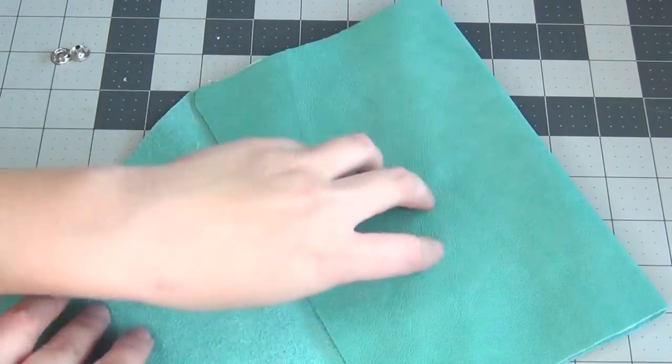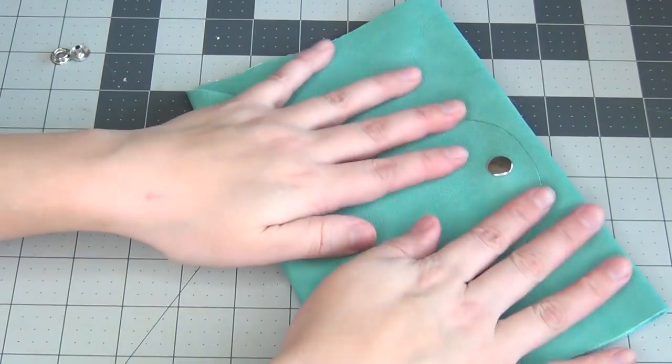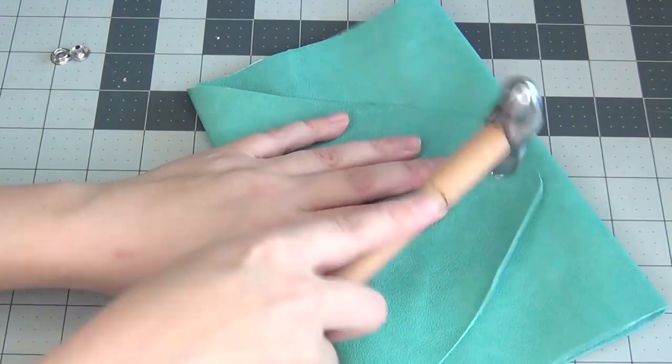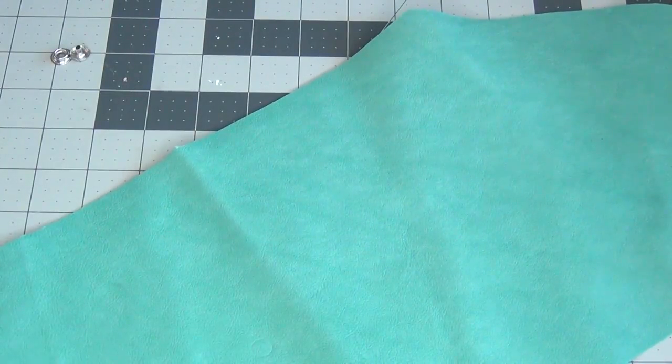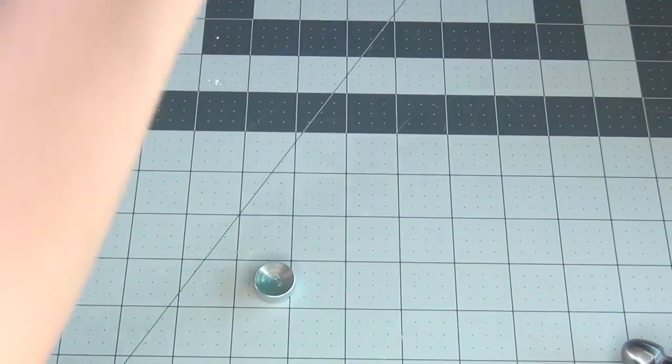Then fold up your bag the way it's going to go and gently tap with your mallet to make a mark where your inside snap is going to go. Then unfold the clutch, use that mark that you just made as a guide, punch a small hole in the very center of it, and then use that hole to install your other end of your snap.